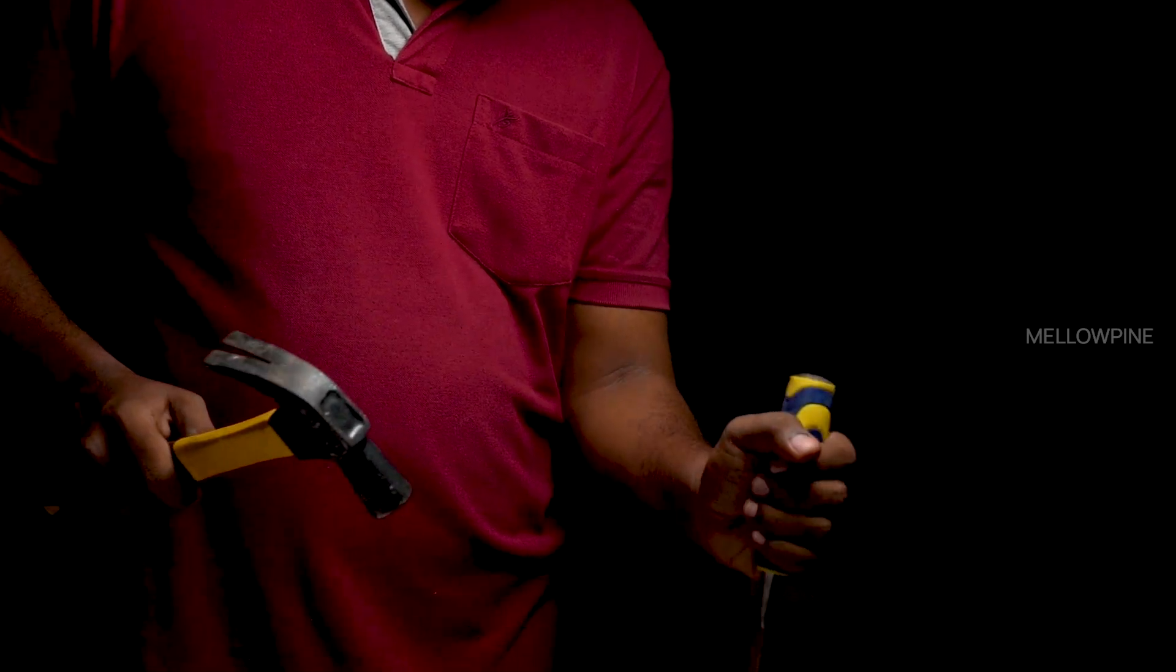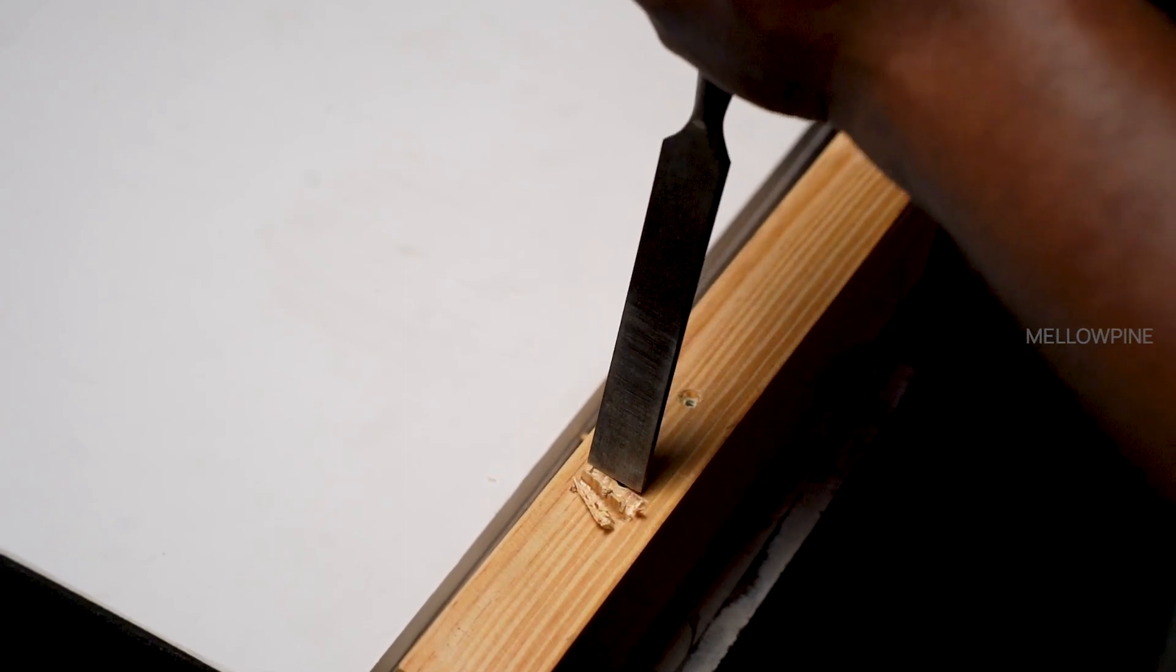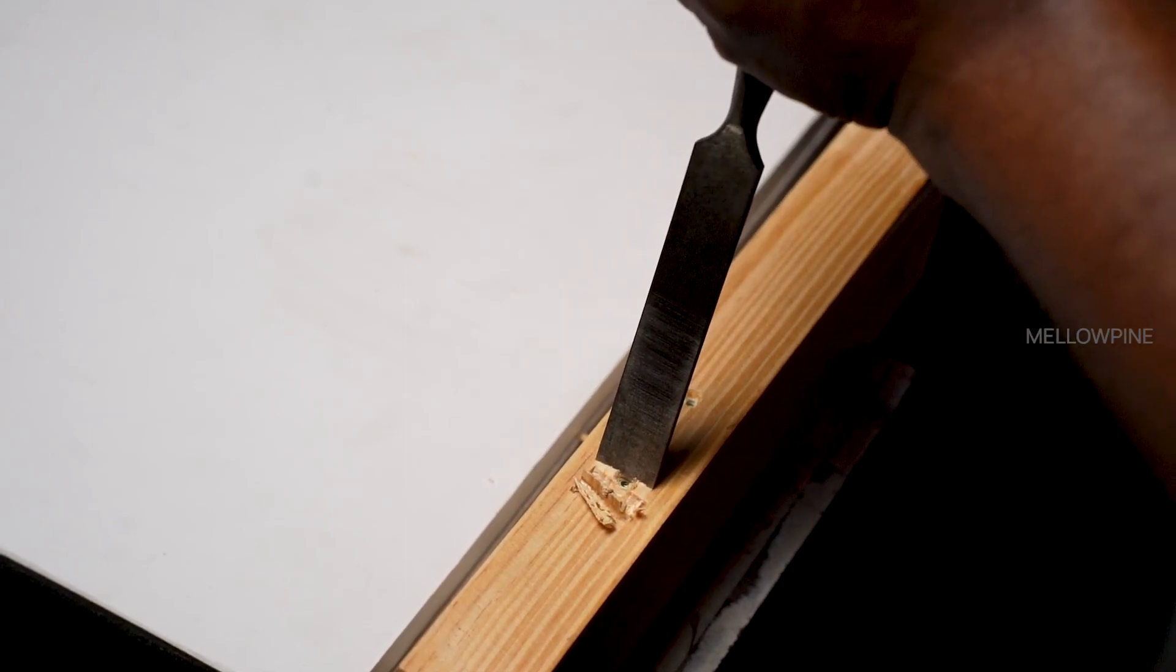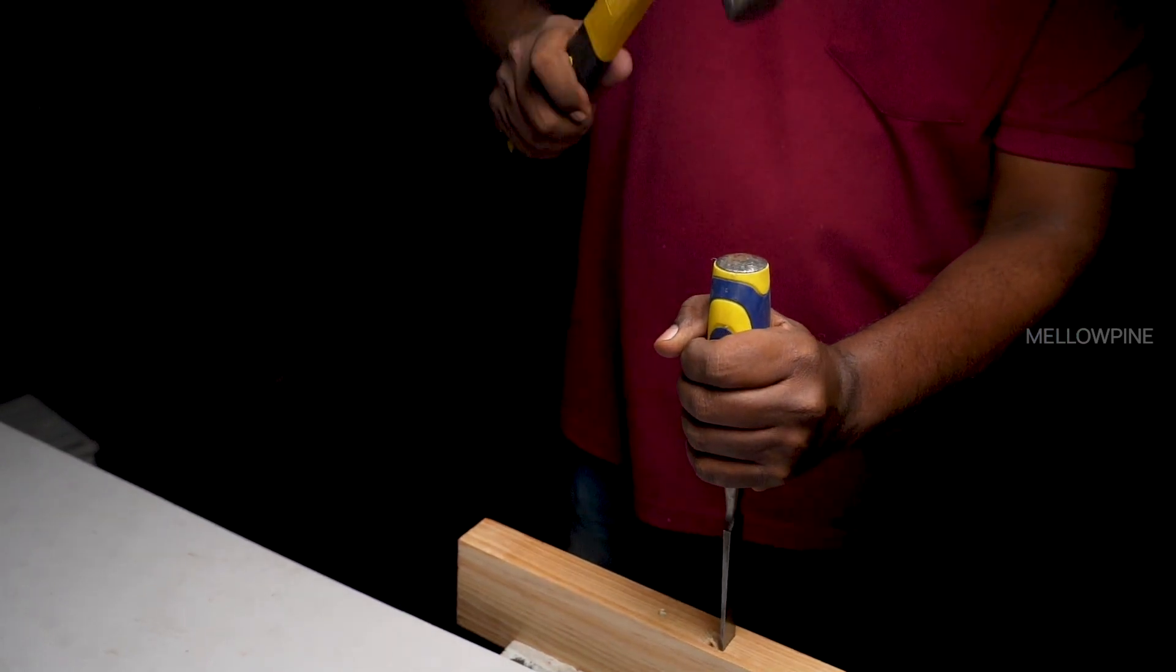Gradually deepen the cut by increasing the pressure with each tap. Take your time and make multiple shallow cuts rather than trying to remove too much material at once. This approach reduces the risk of splintering and allows for more precise control.